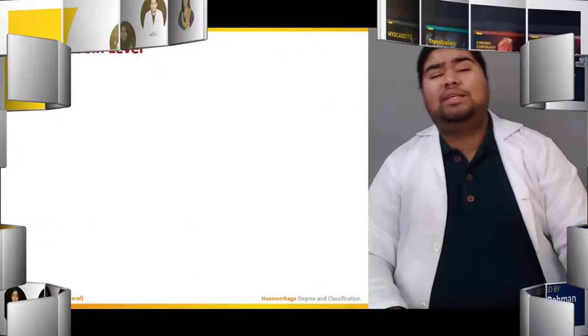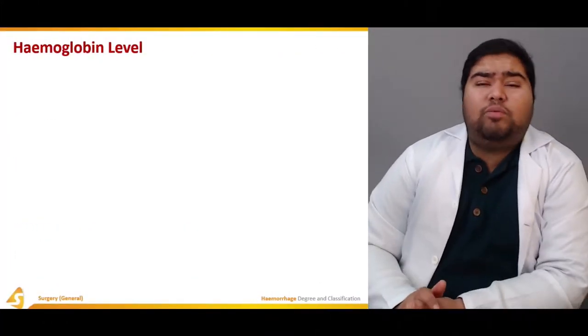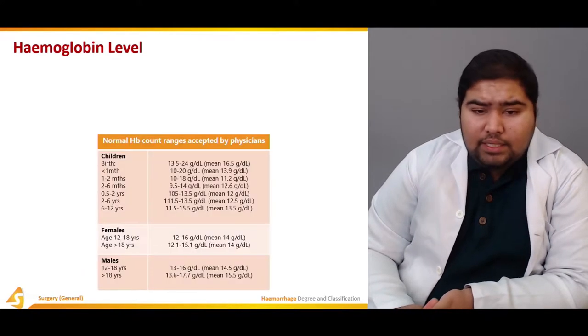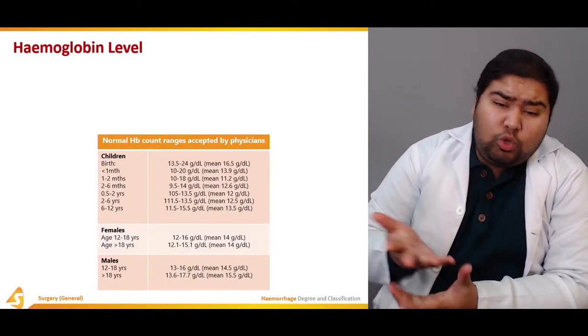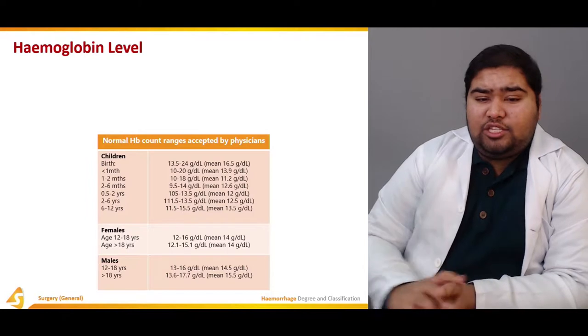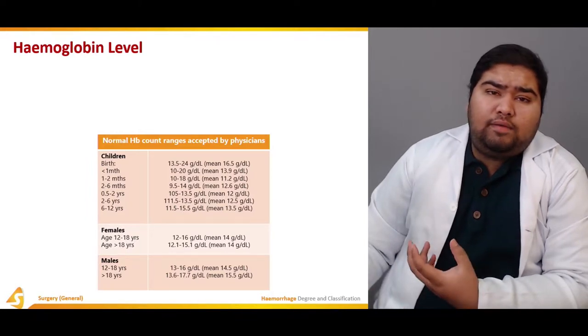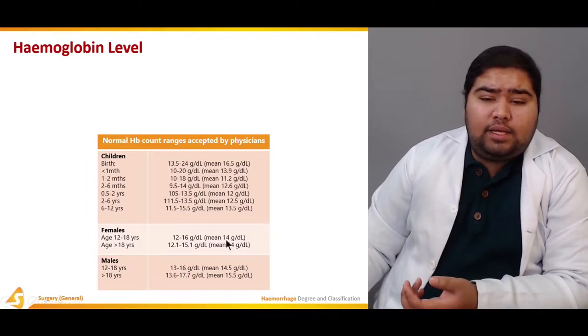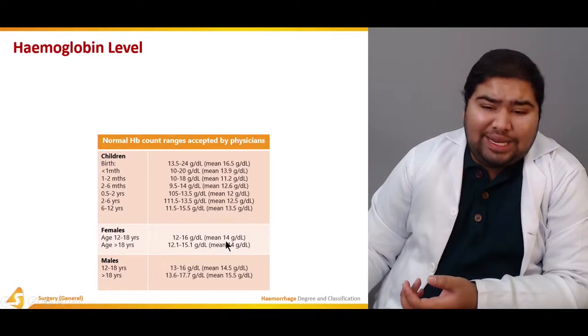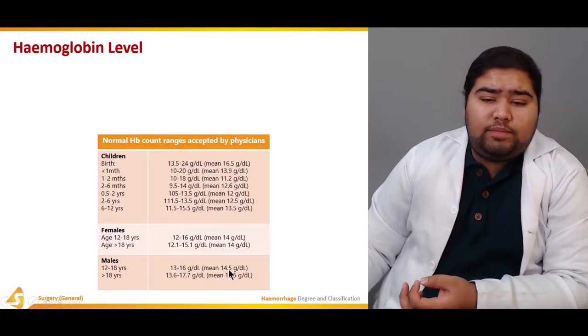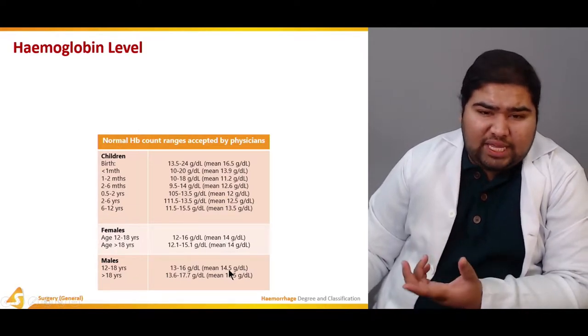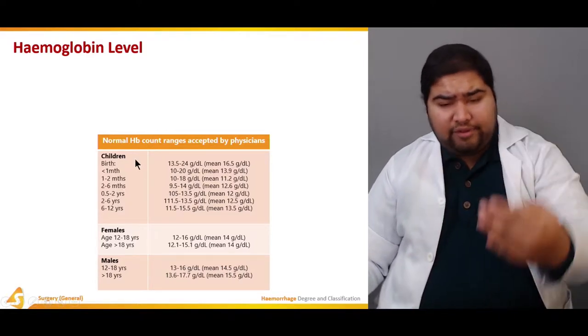Hemoglobin level is the amount of hemoglobin that is present in the blood. What are the normal acceptable ranges? For females it is approximately 14 and for males it is approximately 14.5. In children there's a range.